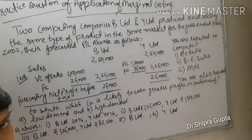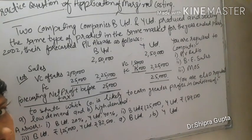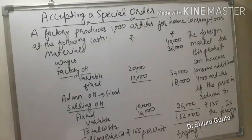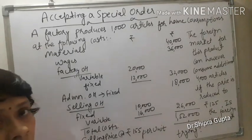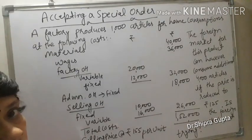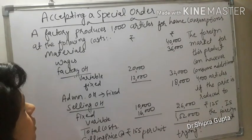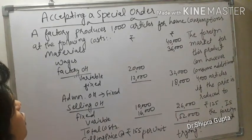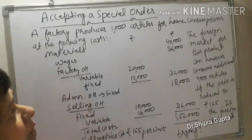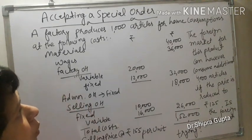If you faced any problem with that question, you can ask me. This is an additional application of marginal costing, and the application name is 'accepting a special order.'